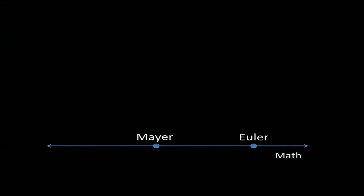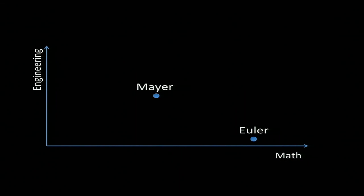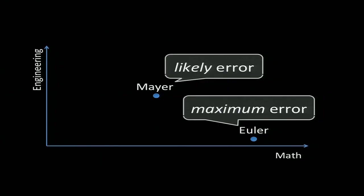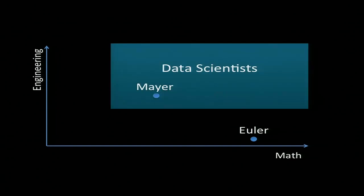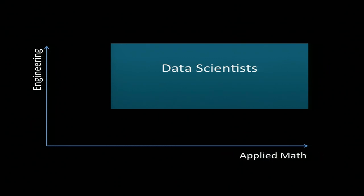So why? If we lay out Euler and Mayer on a continuum of mathematics, Euler is by far the greater mathematician. But Mayer had something else — what I'll call engineering sense. He was a working astronomer dealing with observations he himself had made. He understood his instrument and the kinds of errors it could introduce, and had an intuitive sense for what was a likely error. Euler, on the other hand, was used to thinking in terms of maximum error in complex calculations. It was Mayer's engineering sense that put him squarely in the realm of data scientists — people with both engineering skills and mathematical skills. By math I mean applied math: statistics, econometrics, operations research. And in modern times, the engineering we mean is usually software engineering or programming.